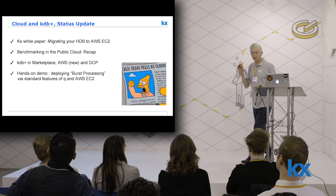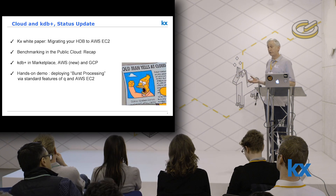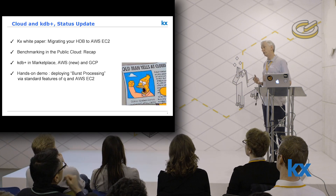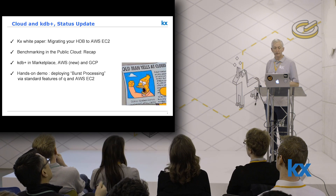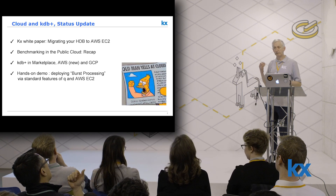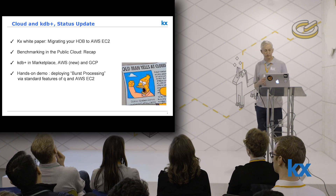As some of you may know, some time ago we published on the KX code.kx.com site a white paper on migrating your HDB to EC2. I'll give a little bit of an update on that. We also have some public benchmarks, primarily with the Stack group, Stack M3. I'll very briefly mention that, and then there's a little bit of an update on KDB in the marketplace on AWS. Then we'll hand over to Rebecca.